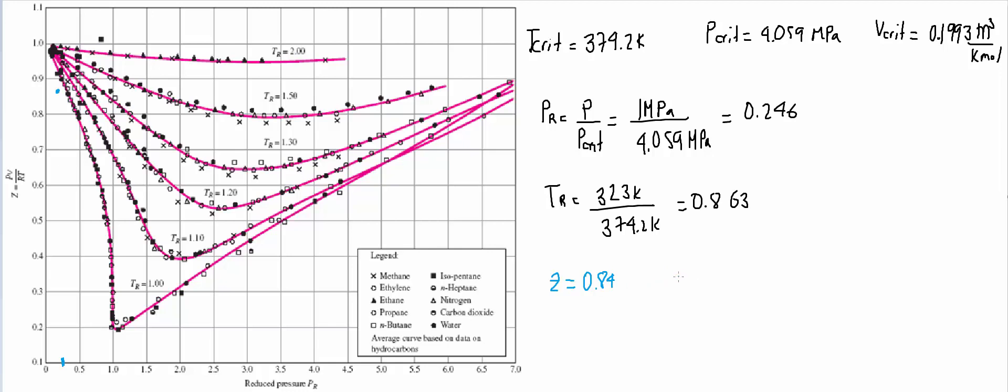Once you have the compressibility factor, you can find the specific volume by doing Z times the ideal value, which is what we obtained in the first part of the problem. Multiplying those two values gives us 0.022113 meter cubed per kilogram.